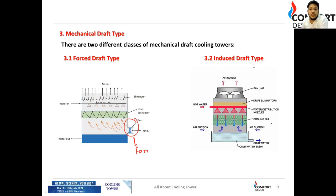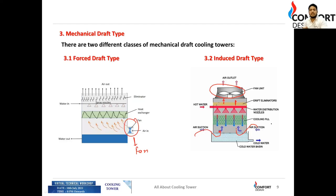In an induced draft cooling tower, the fan is placed at the top. To throw air outward, it sucks air from inside the tower. Air suction occurs from the sides. Hot water is drizzled from the top, and during contact, the air takes the heat from the water. The water temperature drops, it accumulates at the bottom, and the hot air is released into the atmosphere.